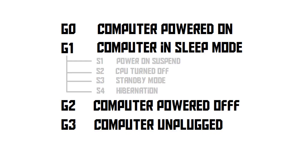ACPI has so-called G states — these are global states for the entire computer. G0 means the computer is on, G1 means the computer is in sleep mode, which is then subdivided into four sleep modes called S states. And then there is also G2, which means the computer is off.